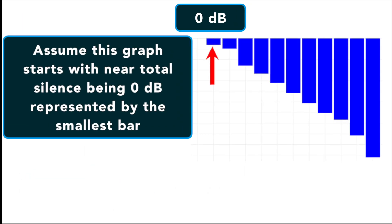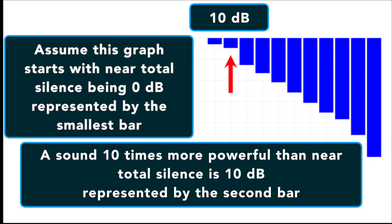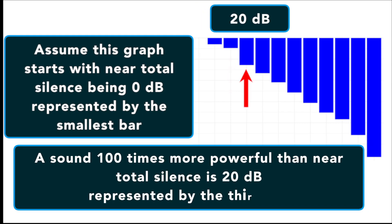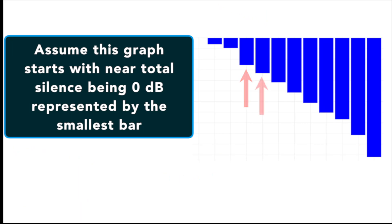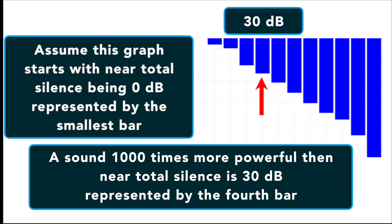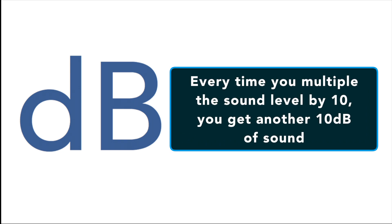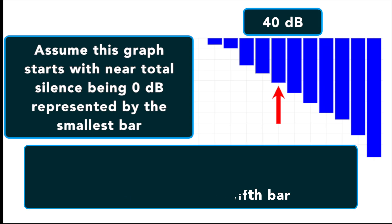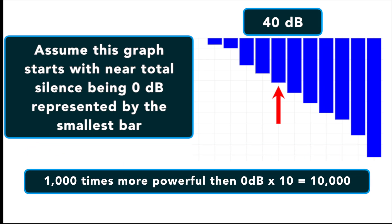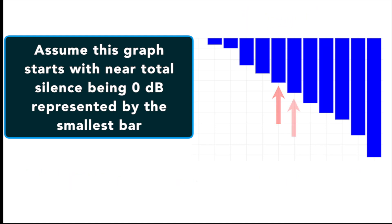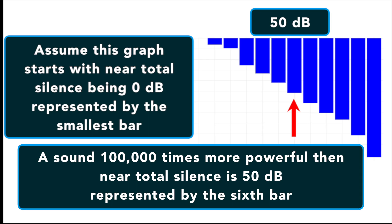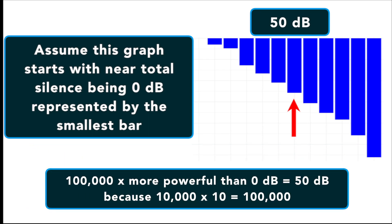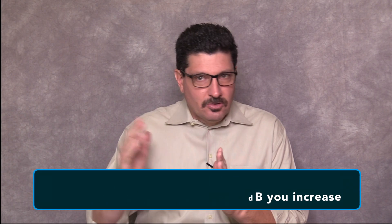Near total silence is zero dB. A sound that is 10 times more powerful is 10 dB. A sound 100 times more powerful than near total silence is 20 dB. A sound 1,000 times more powerful than near total silence is 30 dB and so on. Every time you multiply a sound level by 10, you get another 10 decibels. So a sound that's 10,000 times more powerful than near total silence is 40 dB, and a sound 100,000 times more powerful is 50 dB, and so on.